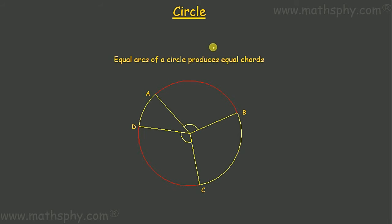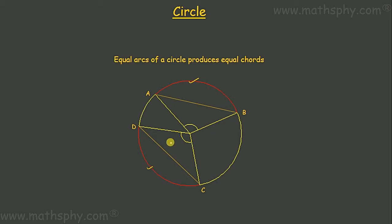The next theorem is: equal arcs of a circle produce equal chords. In this circle, we have two arcs, arc AB and arc DC. If the length of arc AB equals the length of arc DC, then the chord AB made by arc AB and chord DC made by arc DC will also be equal.